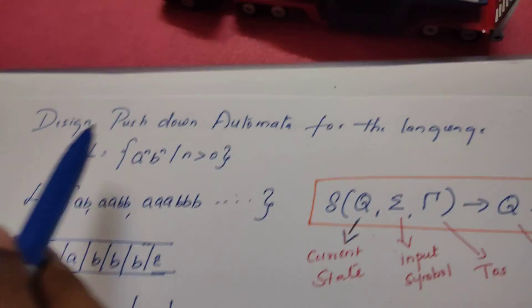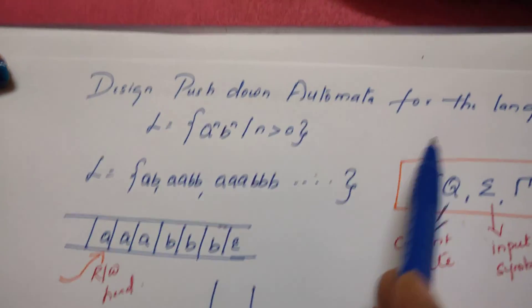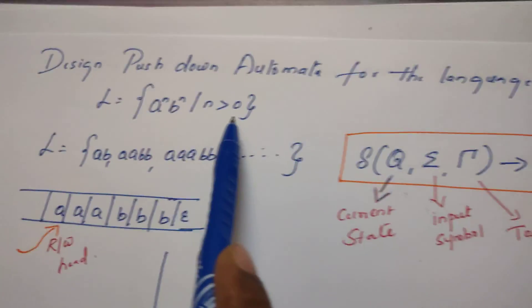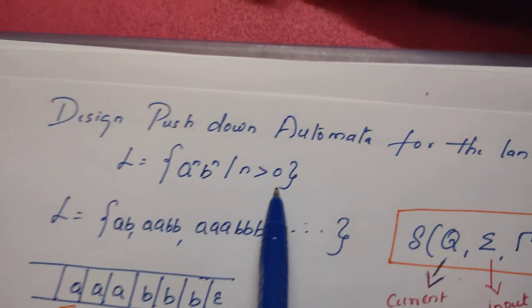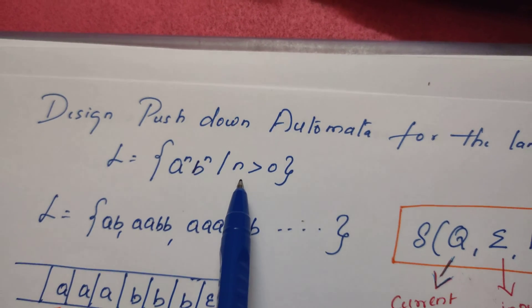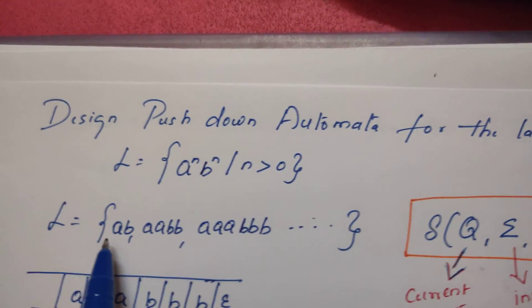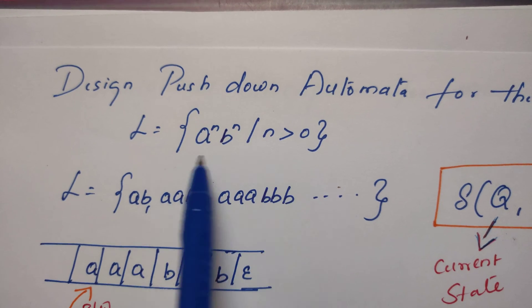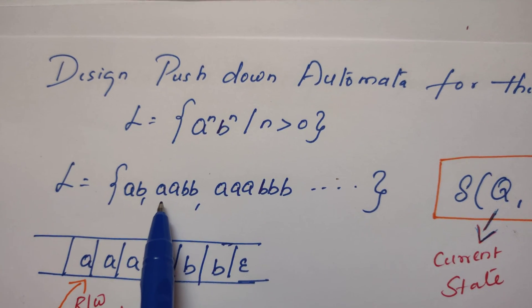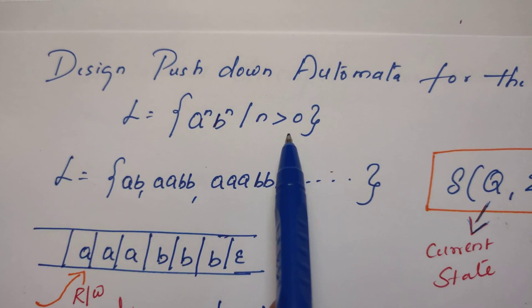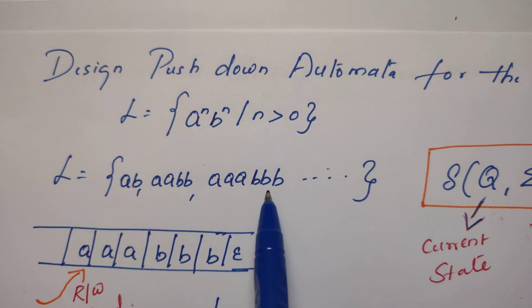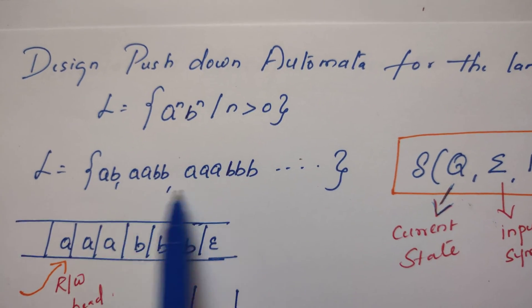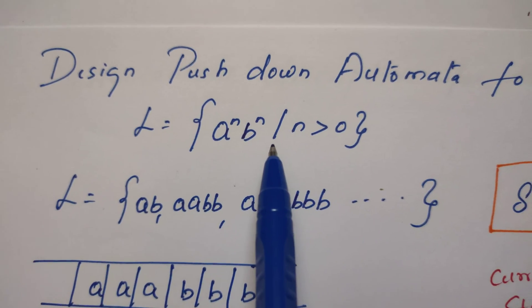In this video we design a pushdown automaton for the language L = a^n b^n such that n is greater than 0. If n equals 1 the string is 'ab', if n equals 2 it is 'aabb', if n equals 3 it is 'aaabbb', and so on. These are the strings that belong to the given language.